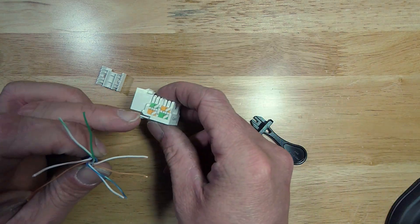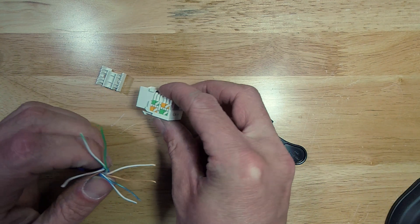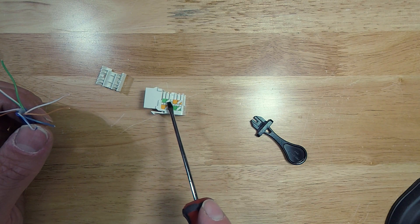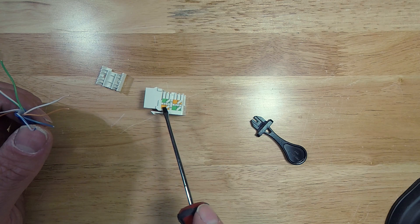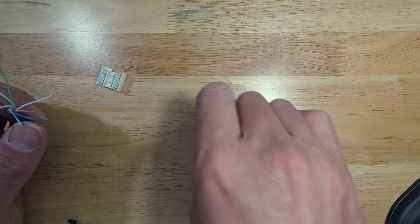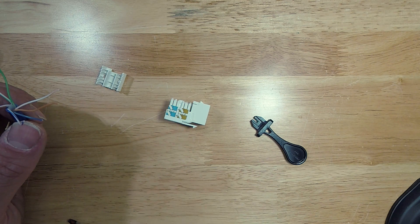First thing I'm going to do is identify which pinout you wish to use. I'm using the B. The only difference between the A and B types is they move your orange and green wires around. Your blue and your brown stay in the same pattern.